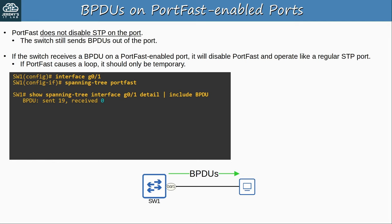Here's an example: Bob from accounting connects his PC to the wall jack in his office, which connects to SW1's G0/1 port. His wall jack only has one port, but he wants to connect more devices to the LAN, so he connects his own switch to the wall jack, then connects his PC, laptop, and other devices to his switch. Bob's switch becomes the root bridge, changing SW1's root and designated ports and the rest of the STP topology.